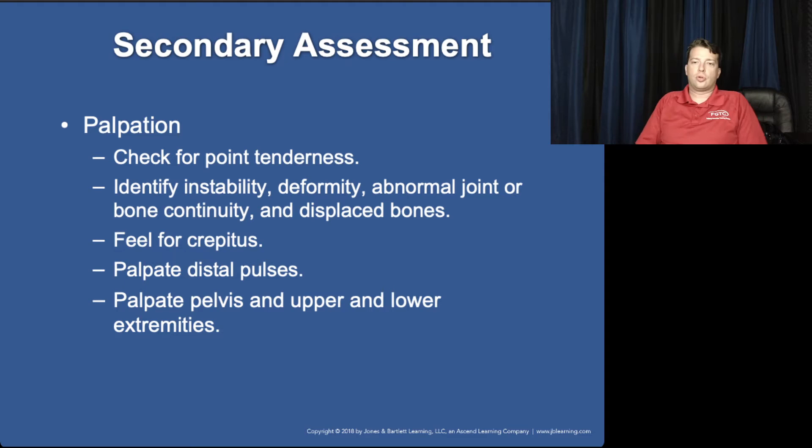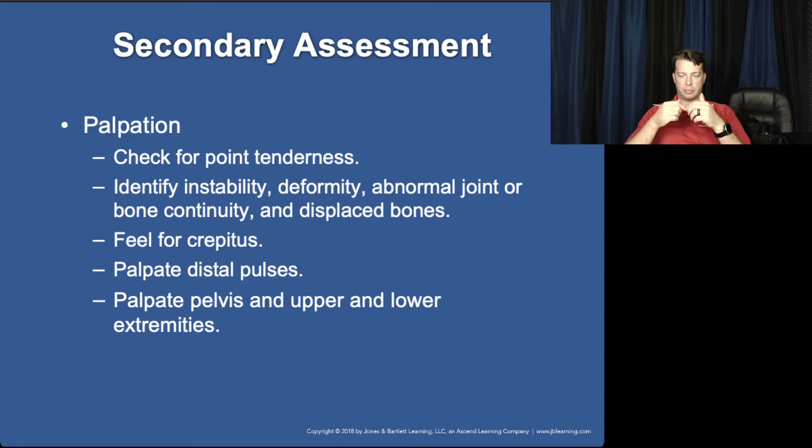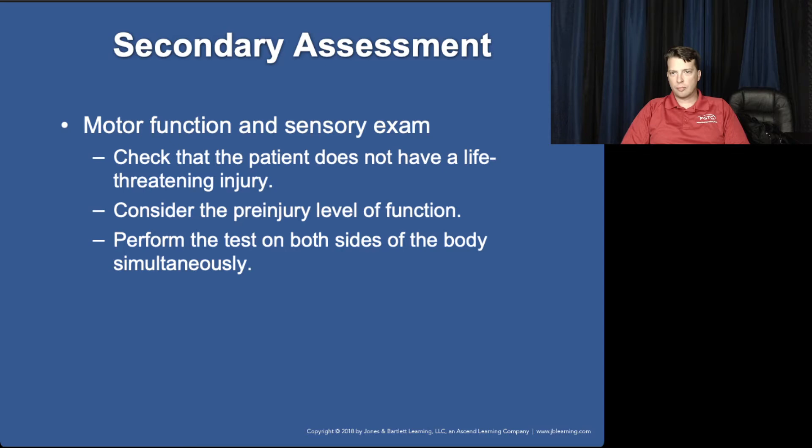Deformity, instability, and abnormal joint continuity — that's where there's not supposed to be a joint in the middle of the humerus, for example, and now you have one. That would indicate a problem. That's what we mean by abnormal joint or bone continuity and displaced bones.